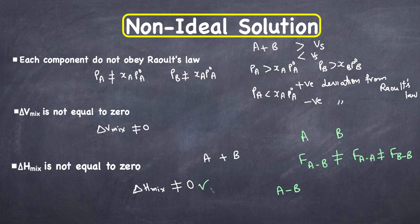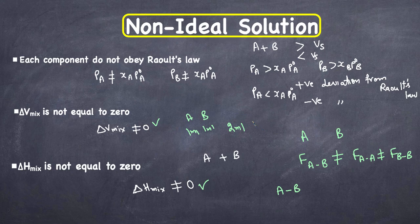So ΔH_mix will not equal zero and the volume will either increase or decrease. For example, if component A and component B are each one milliliter, the total volume before mixing is two milliliters, but after mixing it will be either greater than or less than two milliliters — so ΔV_mix is not equal to zero.